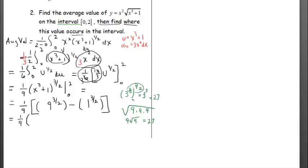So, it's just a personal preference. Fractional exponents, rewriting with powers, or dealing with the square roots. 27 minus 1, 26. 26 ninths is the answer to the average value question.